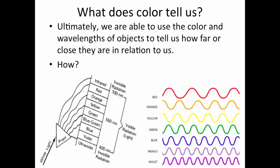You've probably heard the acronym ROYGBIV: red, orange, yellow, green, blue, indigo, and violet. Notice red has the longest wavelength, so it has the least amount of energy. Violet has the shortest wavelength, so therefore it has the most amount of energy.